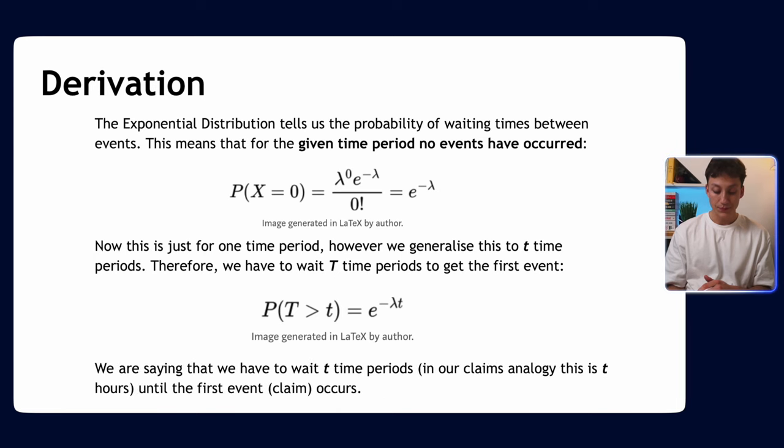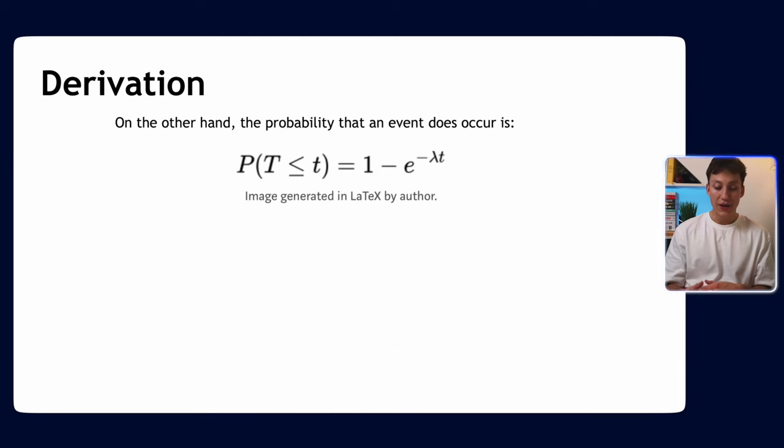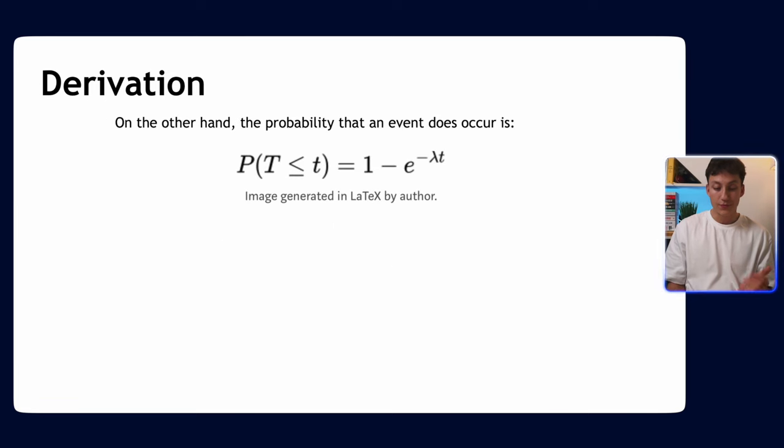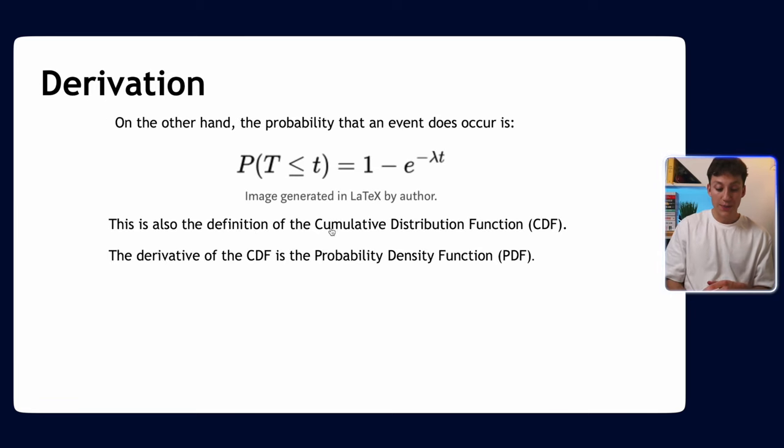We have to wait t time periods—in our claims analogy, t hours—until the first claim occurs. On the other hand, the probability that an event does occur within our time period is simply one minus this expression, because probabilities sum to one. This expression is also known as a cumulative distribution function, CDF.